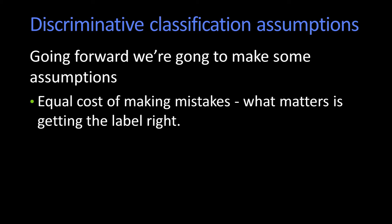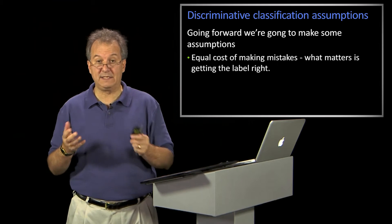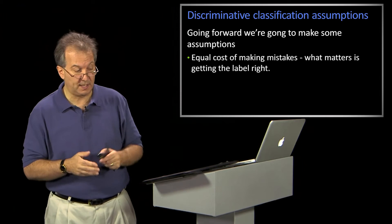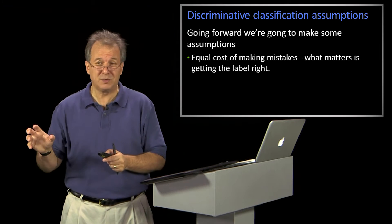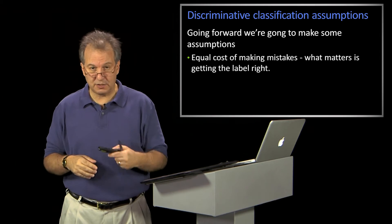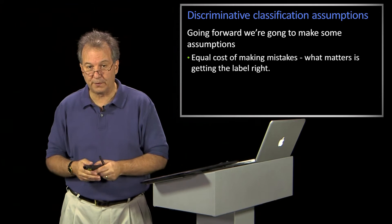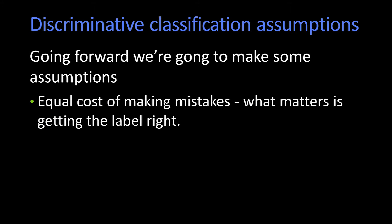For the conversations we're going to have today and next time, we're going to assume an equal cost of mistakes. So it costs you just as much to call an A a not-A as it does to call a not-A an A. One of the methods we'll talk about is the fact that some distributions might be quite asymmetric — for example, if you're looking for faces in an image, most places in most images are not faces, so you might take advantage of that. But we're not going to worry about the relative cost, or the loss function between making the two kinds of mistakes.